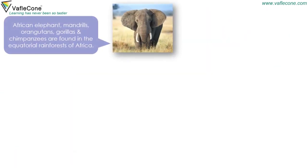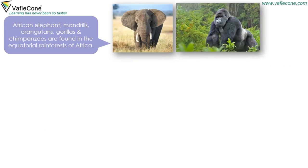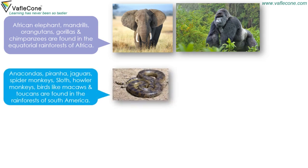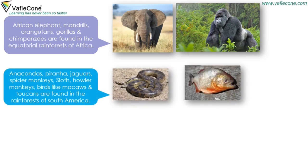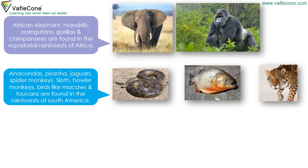Wildlife: African elephant, mandrills, orangutans, gorillas and chimpanzees are found in equatorial rainforests of Africa. Anacondas, piranha, jaguars, spider monkeys, sloths, howler monkeys, and birds like macaws and toucans are found in rainforests of South America.